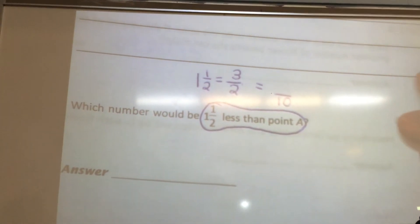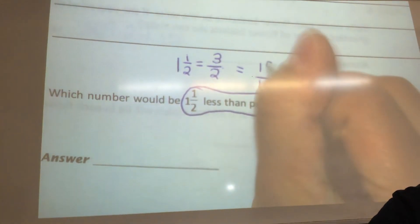On the count of 3, call it out. 1, 2, 3. If you said 15, you would be right.